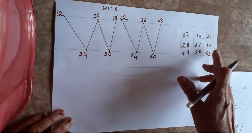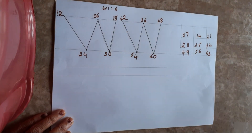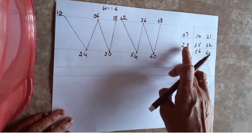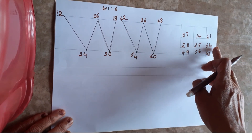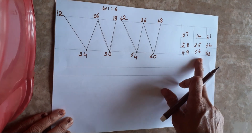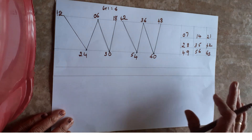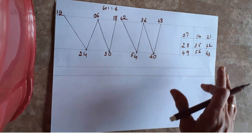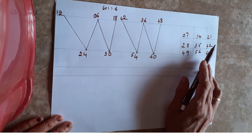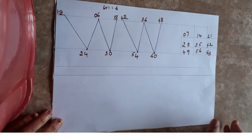You can see: 7 ones are 7, 7 twos are 14, 7 threes are 21, 7 fours are 28, 7 fives are 35, 7 sixes are 42, 7 sevens are 49, 7 eights are 56, 7 nines are 63, 7 tens are 70. That's the seventh table. Now see the eighth table.